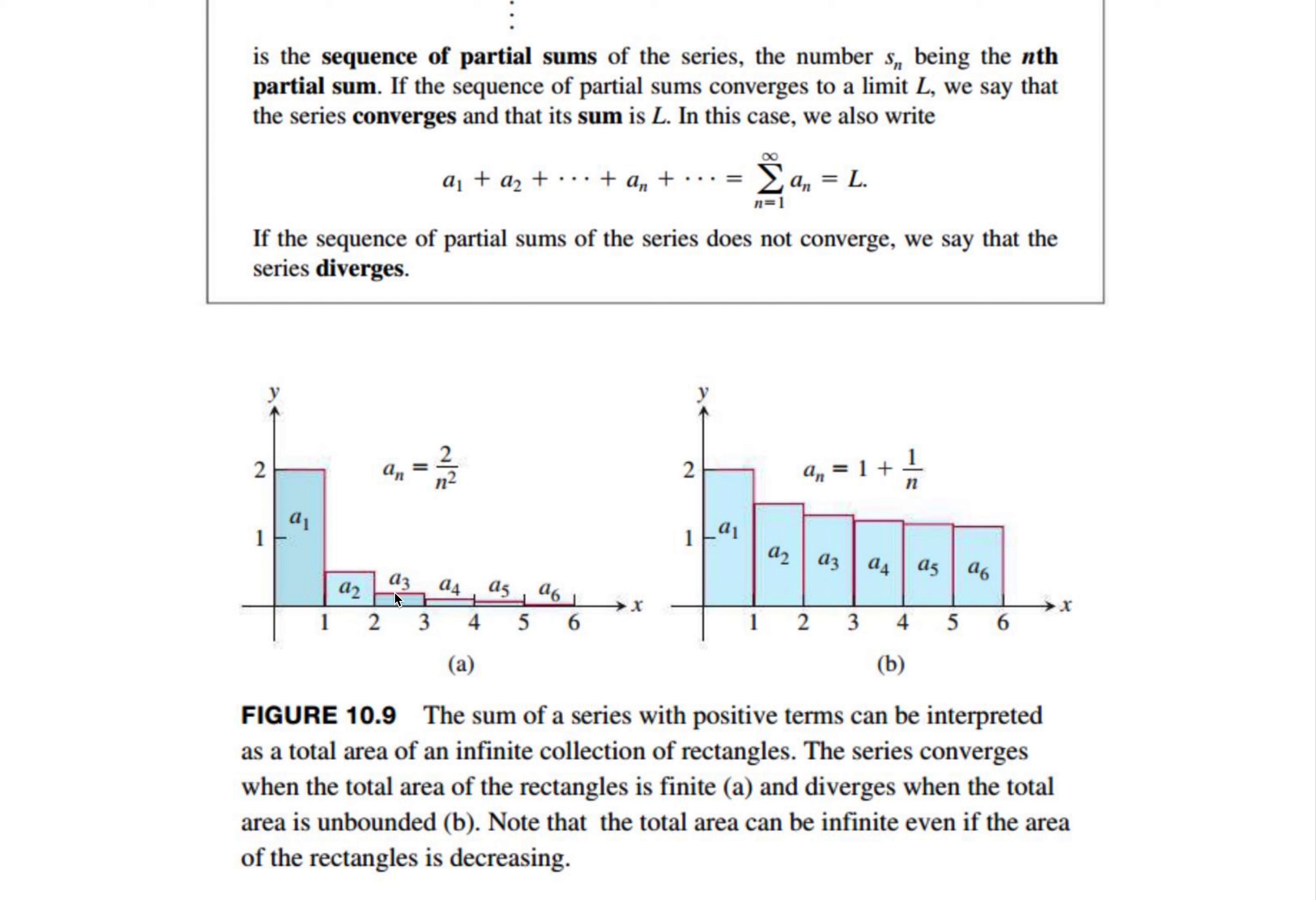So you've got a_1, a_2, and on down. You can see very quickly, these rectangles are getting very small. Their areas are approaching zero very quickly. Basically, this series has a limit.